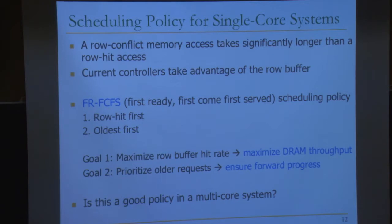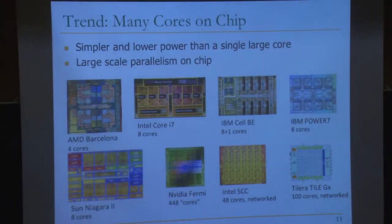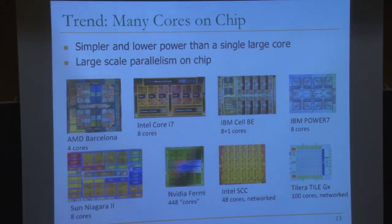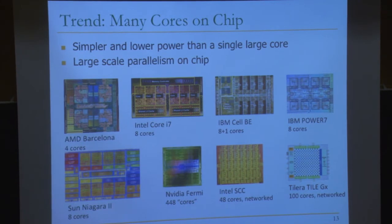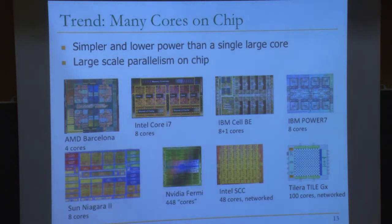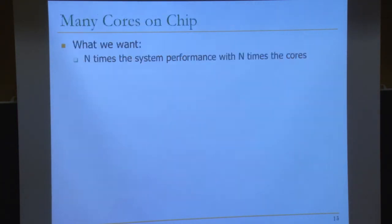So is this a good policy in a multi-core system? Today we have many cores on chip — they're simpler and lower power than a single large core and enable large-scale parallelism. What we ideally want is n times the system performance with n times the cores. But because of memory interference, that's not what we get.